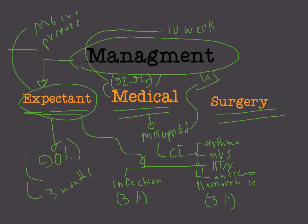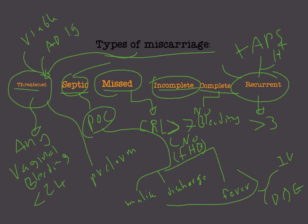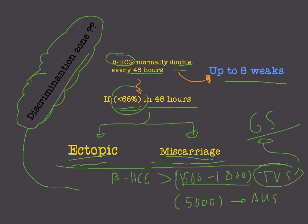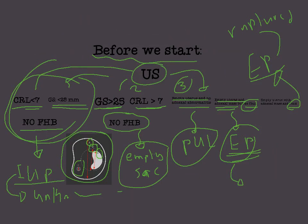The third and final management option is surgery. Surgical methods include vacuum aspiration, D&E — dilatation and evacuation — and D&C — dilatation and curettage — in some cases.